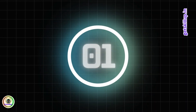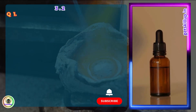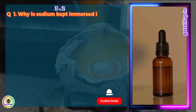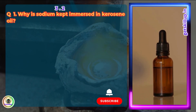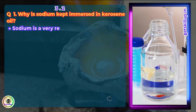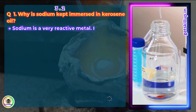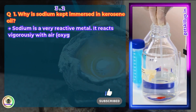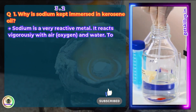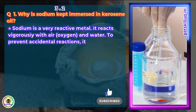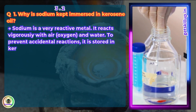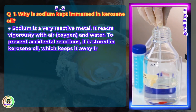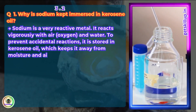Question 1. Why is Sodium kept immersed in kerosene oil? Sodium is a very reactive metal. It reacts vigorously with air and water. To prevent accidental reactions, it is stored in kerosene oil which keeps it away from moisture and air.